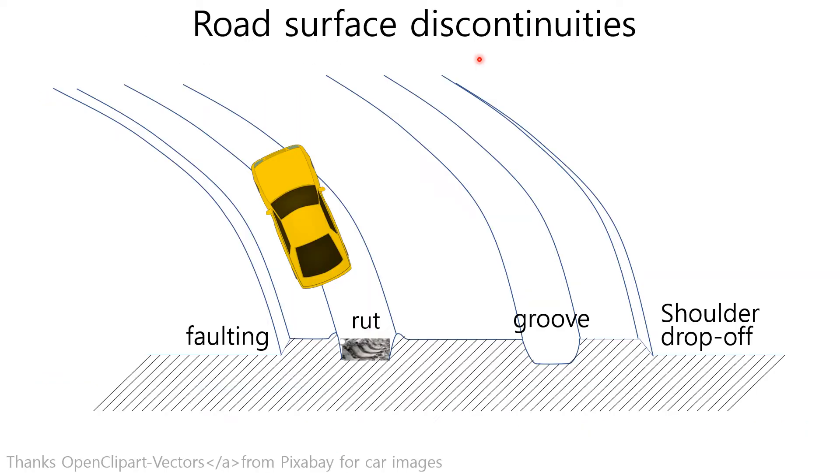Sometimes we meet road discontinuities along the direction of travel like in this picture. For example, faulting, rut, groove, and shoulder drop-off. In this situation, camber stiffness coefficient is getting more important.